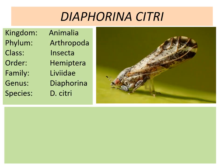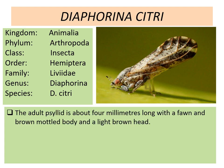Diapherina citri is a hemipteran and a psyllid. Its classification includes: kingdom Animalia, phylum Arthropoda, class Insecta, order Hemiptera, family Psyllidae, genus Diapherina, species citri.